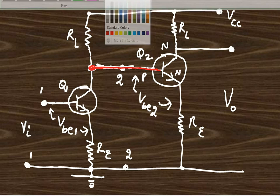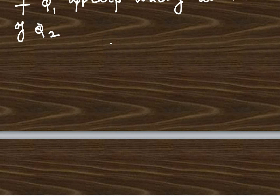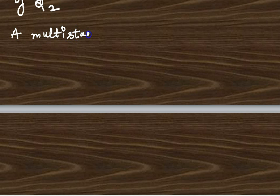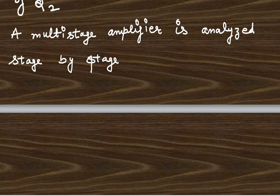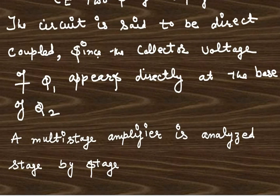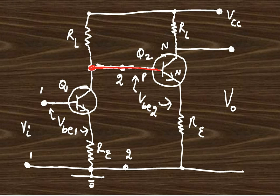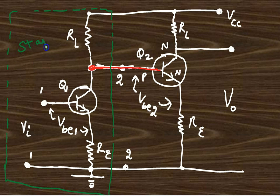There is no intermediate element used for coupling. We will discuss stage by stage this multi-stage amplifier — multi-stage meaning two-stage amplifier. This is our first stage, in which the transistor is Q1.